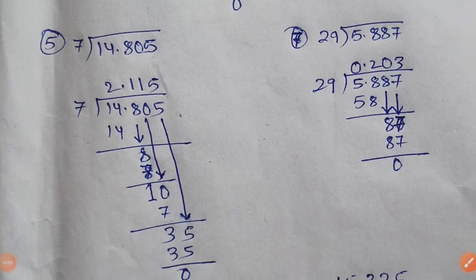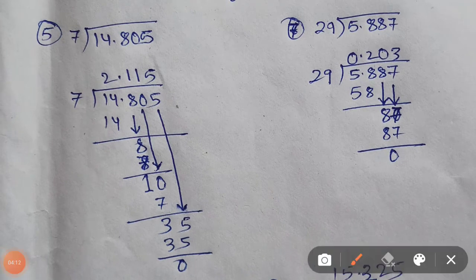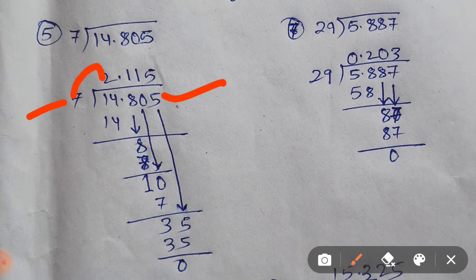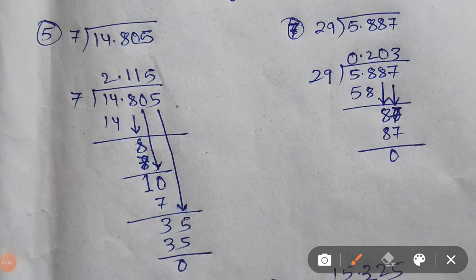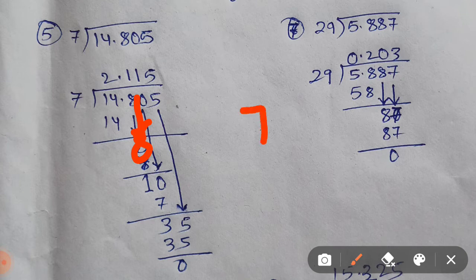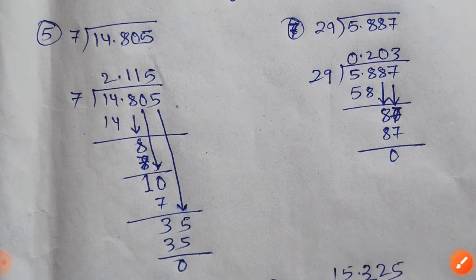Let us see another question, question number 5. The dividend is 14.805 and divisor is 7. Now let us try to divide it. 7 times 2 is 14 directly. 14 minus 14 will give 0. Send this decimal point up. Now try bringing this 8 down. We will try to find 8 in the table of 7, which is not possible. But we have a number smaller than 8, that is 7. So 7 times 1 is 7. We will write 1, and 8 minus 7 will give you 1.